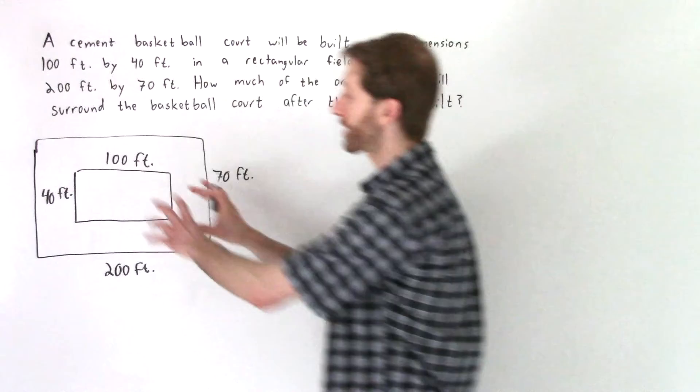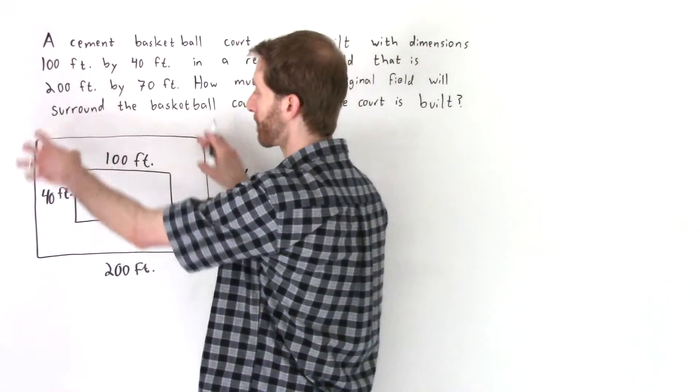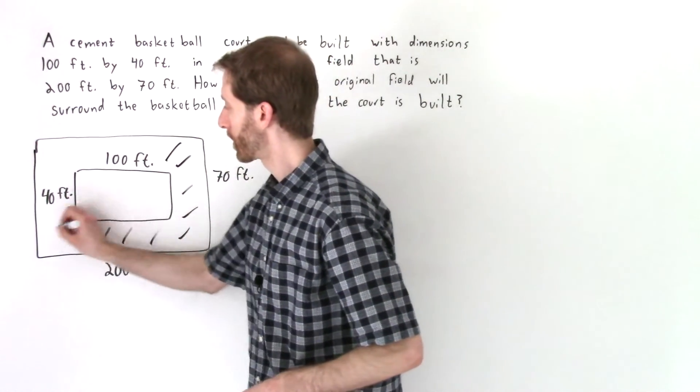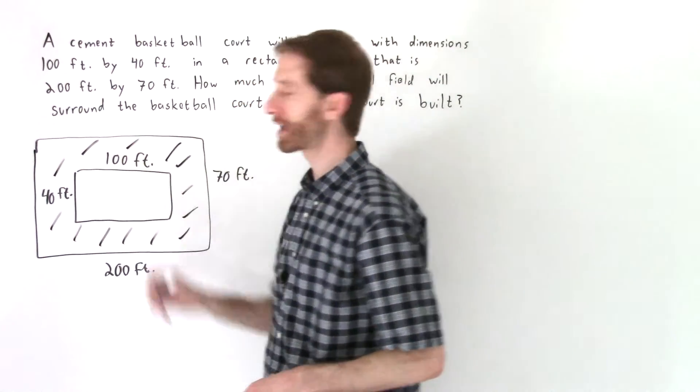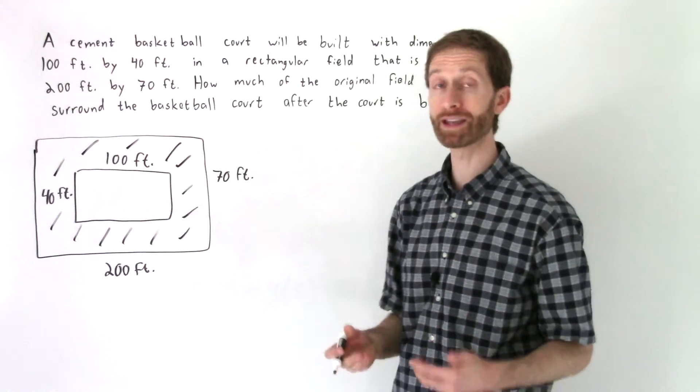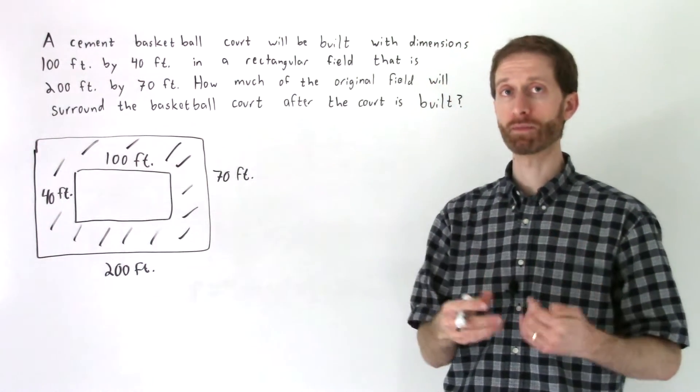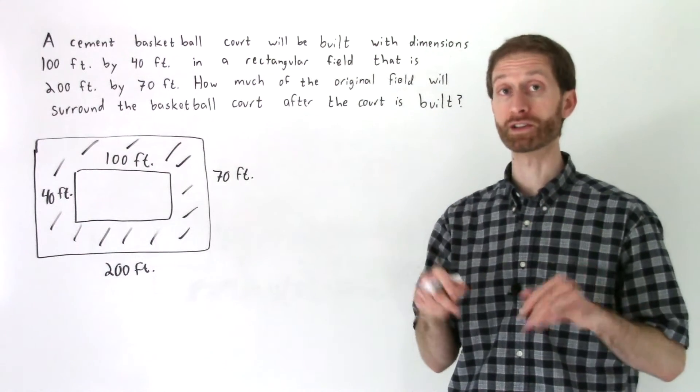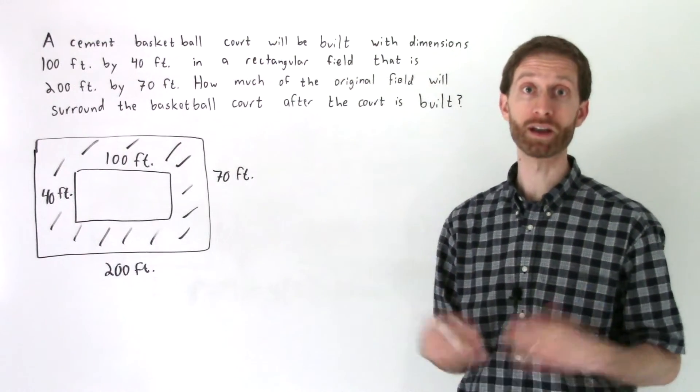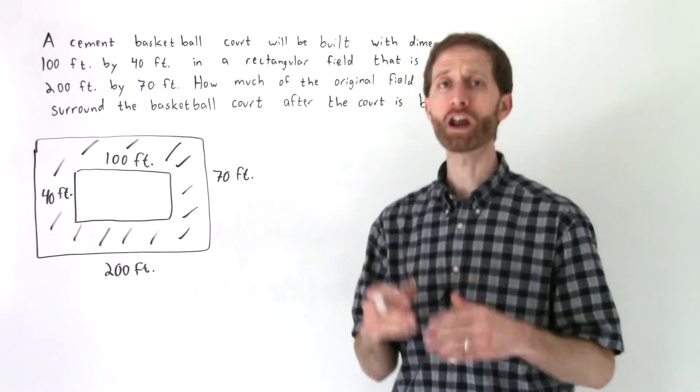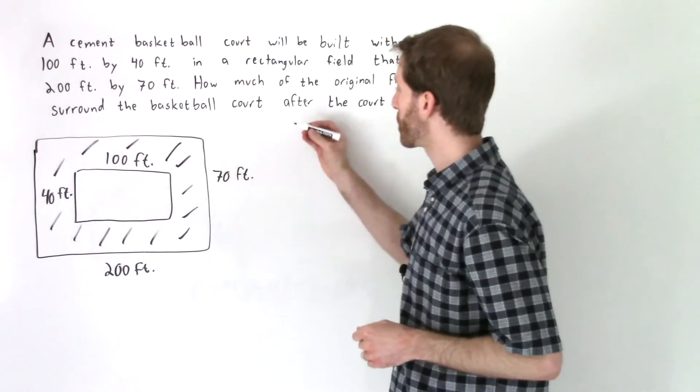You've got this basketball court that's going to be placed on top of this field, and we've got all of this remaining area that we want to find. So we're basically being asked how much of that remaining area is there. When we talk about the amount that something covers something else, we're talking about surface, and that's how I assume that this is going to be area.